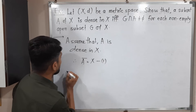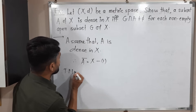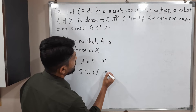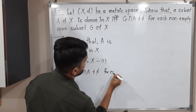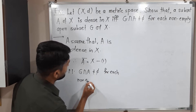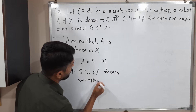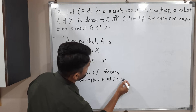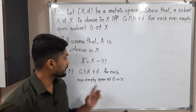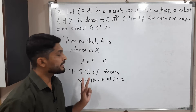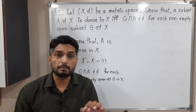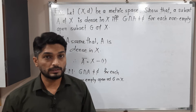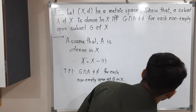What we have to prove: G intersection A is not equal to phi for each non-empty open set G in X. That means if you take any arbitrary non-empty open set, then definitely G intersection A is not equal to phi. In simple language, A intersects each and every non-empty open set. Let me draw a diagram so the picture will be clear.